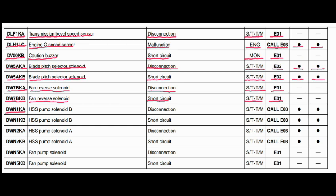Code DWN1FA. The faulty part is the HSS pump solenoid B — HSS meaning hydraulic steering system. The problem is disconnection. The steering and transmission controller is related to this fault, and the action code is E03. Caution lamp will blink and caution buzzer will beep.